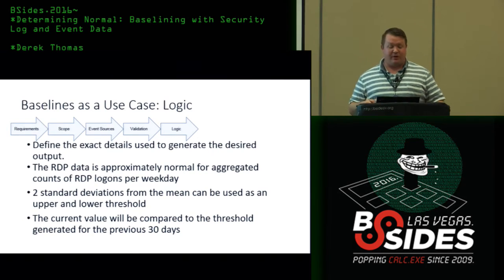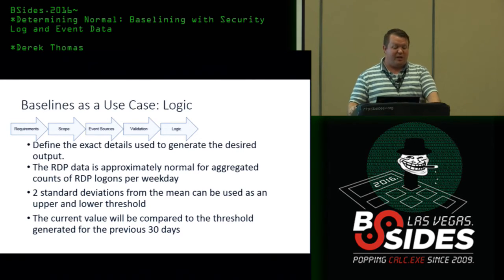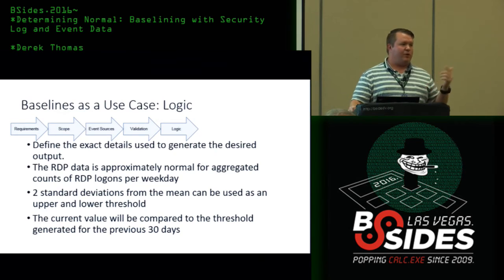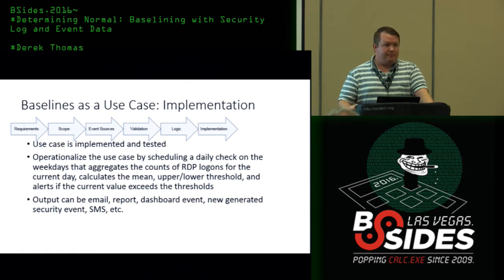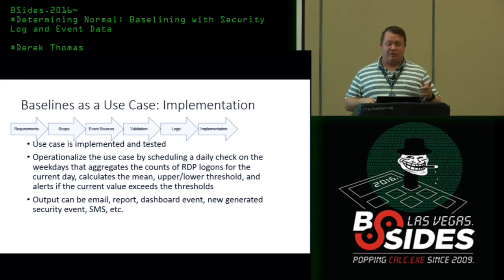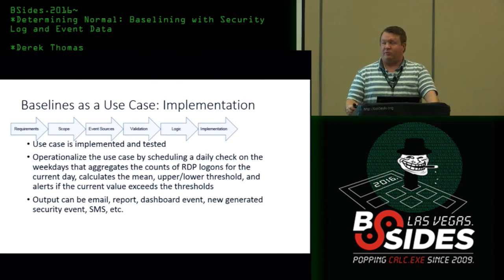The threshold is created in the logic section — we find the exact details to generate the desired output. In our case, quantities exceed or go below our thresholds. We're going to use two standard deviations, so 95% of the time data should fall within range and 5% will generate an alert. The actual logic: compare yesterday's current value to the baseline generated from the 30 days prior. Someone asked whether to use 28 days to match the same day of the week — since this is only weekday data, that's not a concern, though if data varies significantly by weekday, you might not want to baseline all weekday activity together.